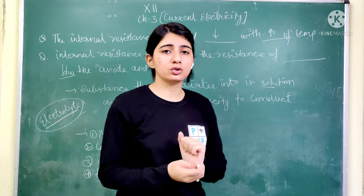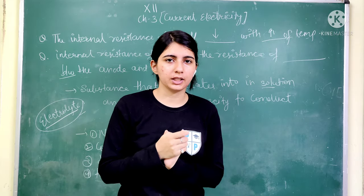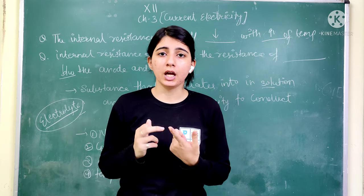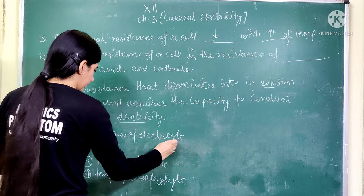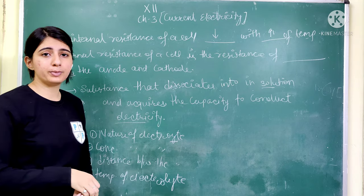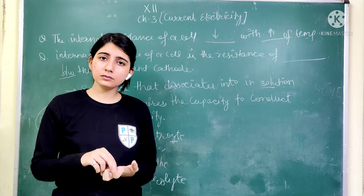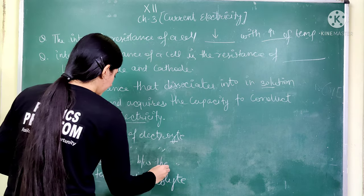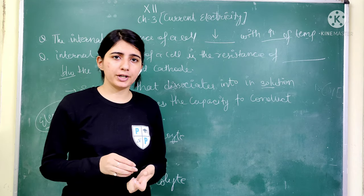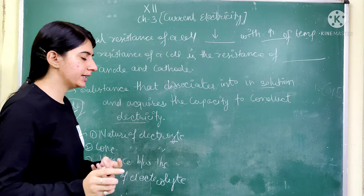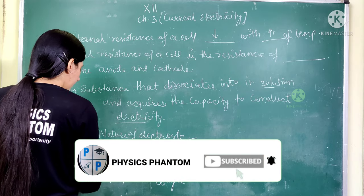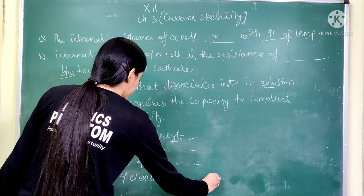An important question concerns internal resistance, denoted by small r. Internal resistance depends on four factors: first, the nature of the electrolyte; second, the concentration of the electrolyte; third, the distance between the electrodes; and fourth, the temperature of the electrolyte. So internal resistance of a cell depends on these four points.